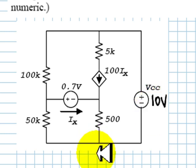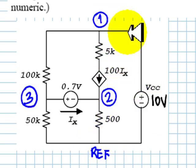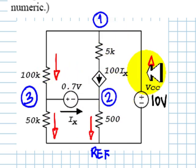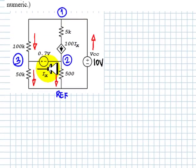I choose my nodes: the reference, node one, two, and three. Now the currents, arbitrary everywhere except where they are given, in this branch and in that branch.